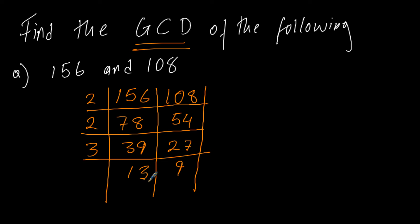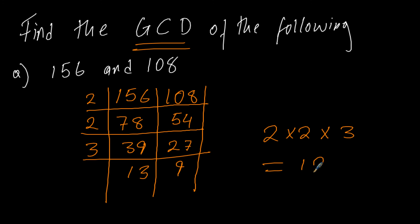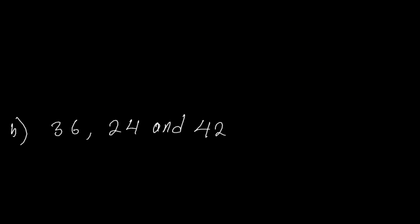And basically I will stop here, because we don't have any other prime factor which can divide both 13 and 9. So we shall just multiply: 2 times 2 times 3, which is 12. So the greatest common divisor of these two numbers is 12, or the HCF of those two numbers is 12. And then we go to Part B.